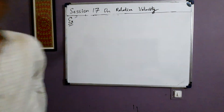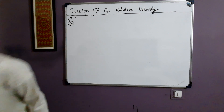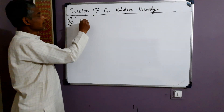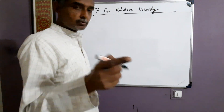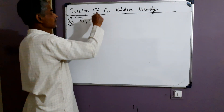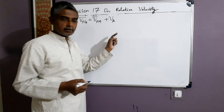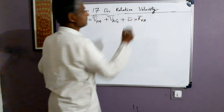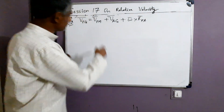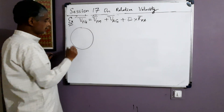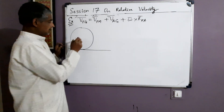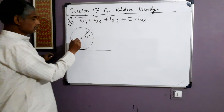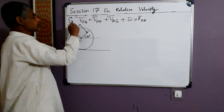To find VPG, we evaluate each term. VPW is 4 meters per second along the spoke at 60 degrees to the positive x-axis, so VPW = 4 cos60° i-hat + 4 sin60° j-hat = 2 i-hat + 2√3 j-hat meters per second. VCG is the velocity of the center of the wheel with respect to ground, which is 8 meters per second rightward: VCG = 8 i-hat meters per second. Now we need omega cross RPC.